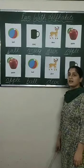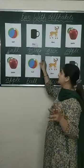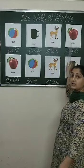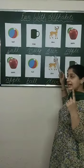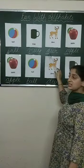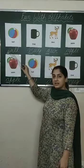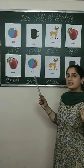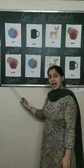Let's take an example. We have the words: ball, mug, deer and apple. According to alphabetical order, which alphabet will come first? A. Apple starts with A, deer starts with D, mug starts with M, and ball starts with B. So apple will come first in alphabetical order.